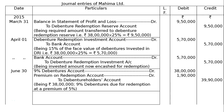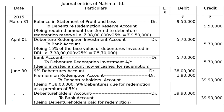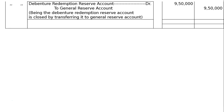On 30th June, the debenture holders are paid by cheque: Debenture Holders account debited to Bank account, being debenture holders paid for redemption. The amount will be ₹39,90,000, and this completes the redemption of debentures. Hence the last entry will be Debenture Redemption Reserve account debited to General Reserve account, being the Debenture Redemption Reserve account closed by transferring it to General Reserve account.